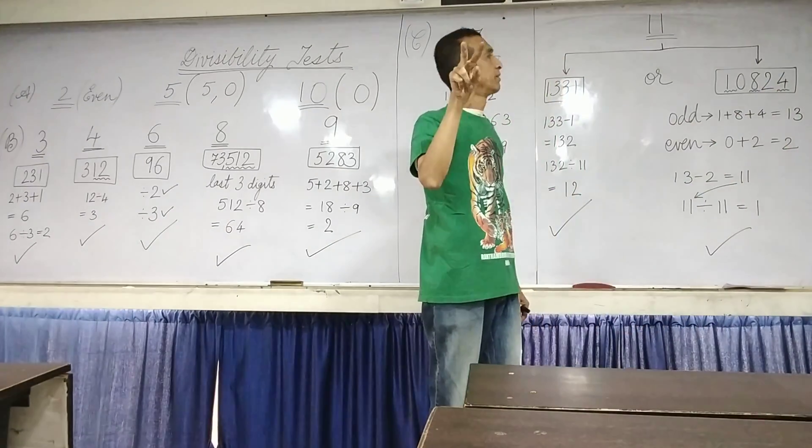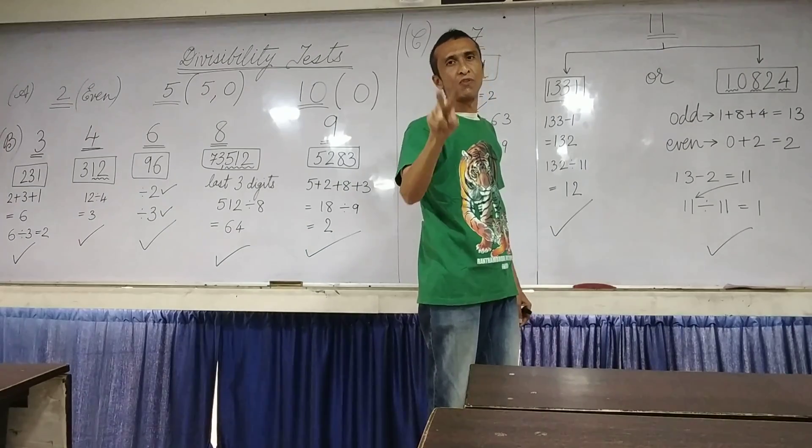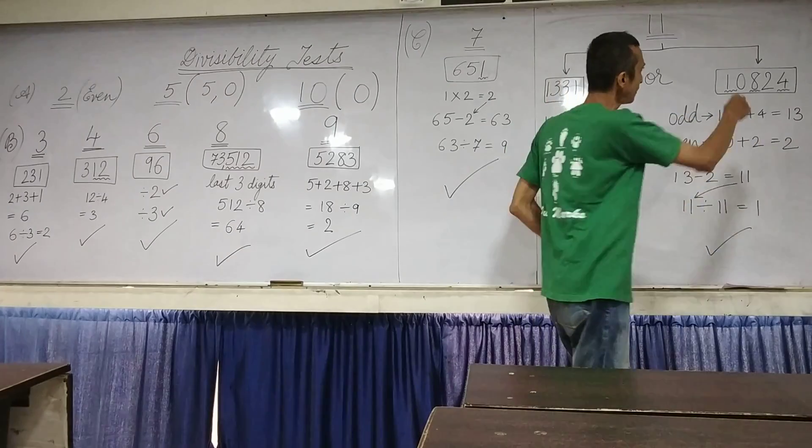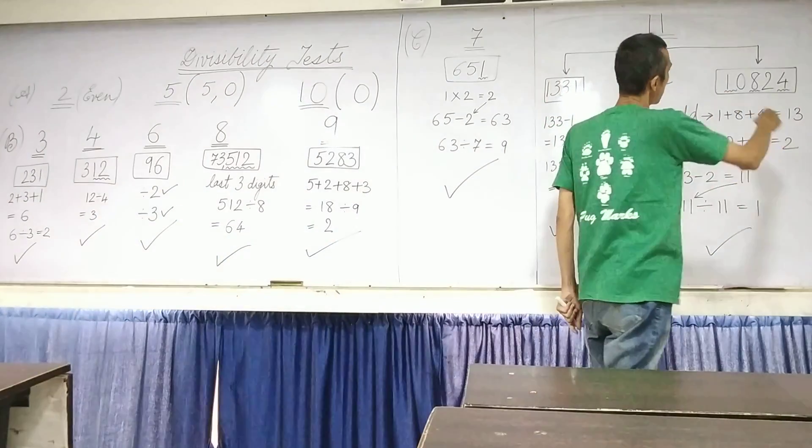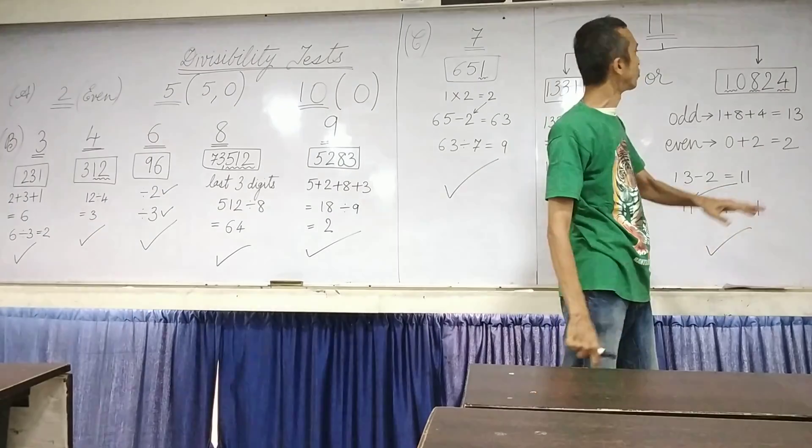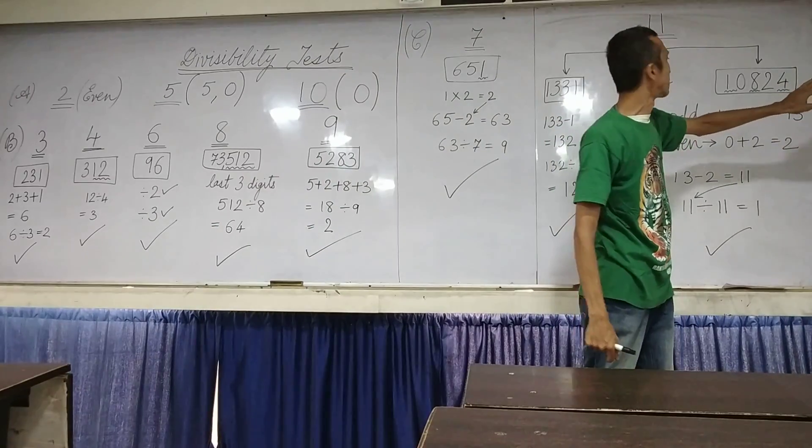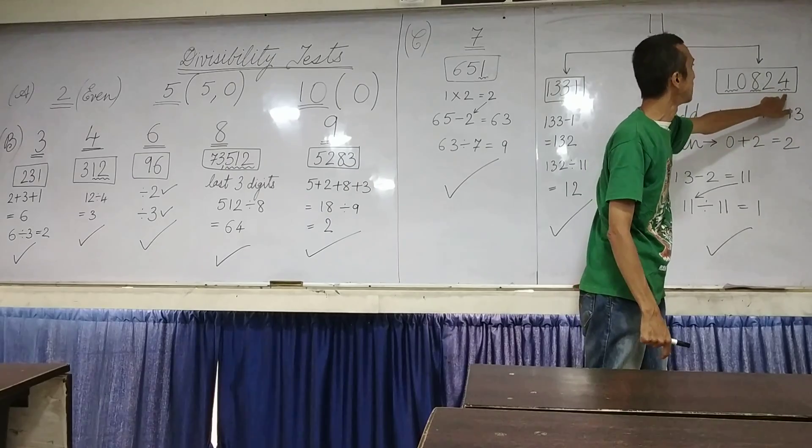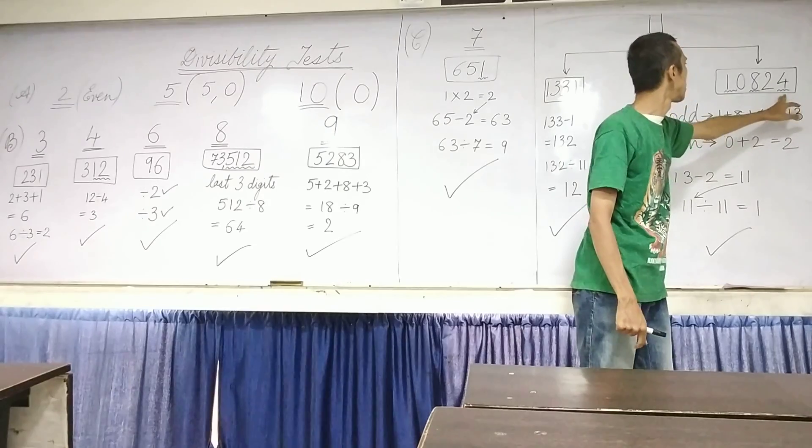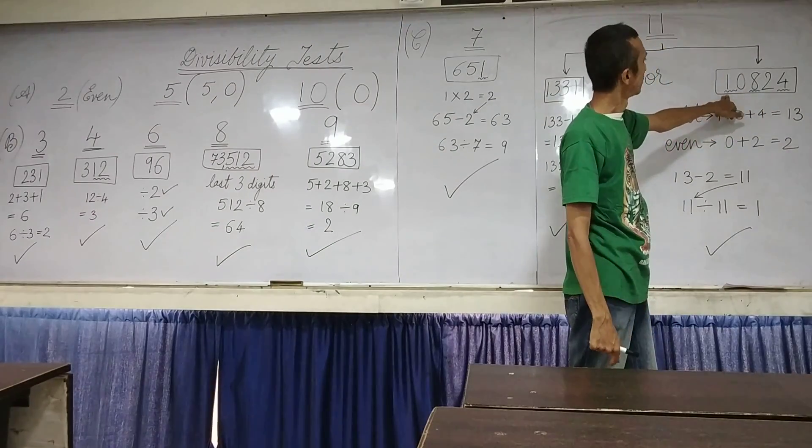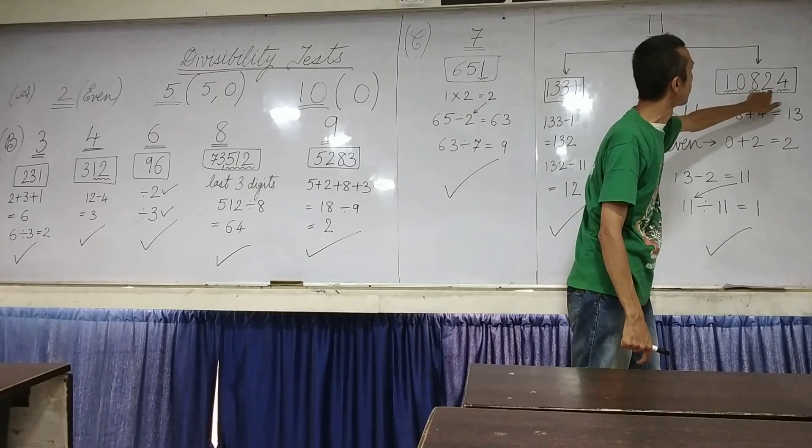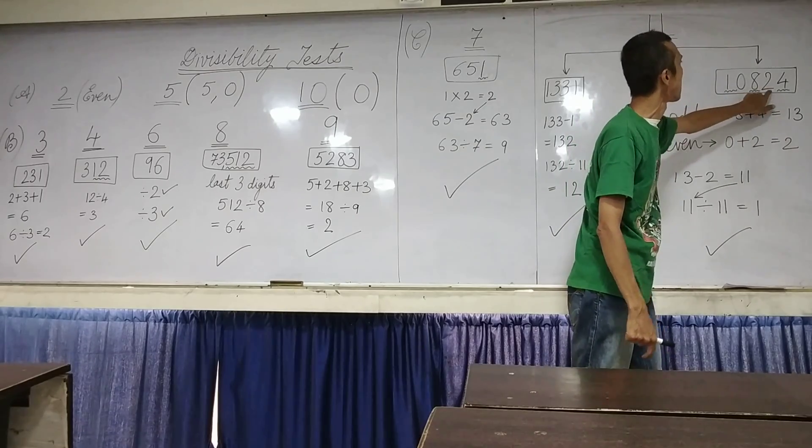The second method of finding out whether the number is divisible by 11 is here. I take a big number this time. 10824. Now in this particular case, what you do is, you pick up the even digits and the odd digits. So these wavy lines, they show the odd digits, the first, third, first, the third and the fifth.